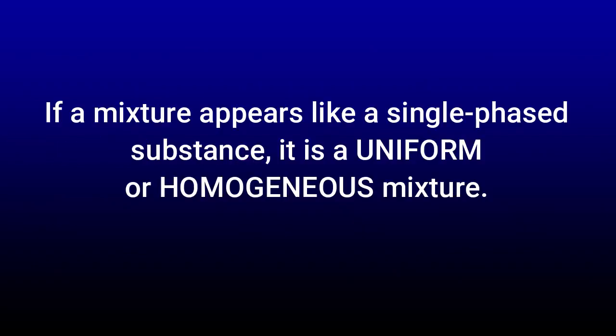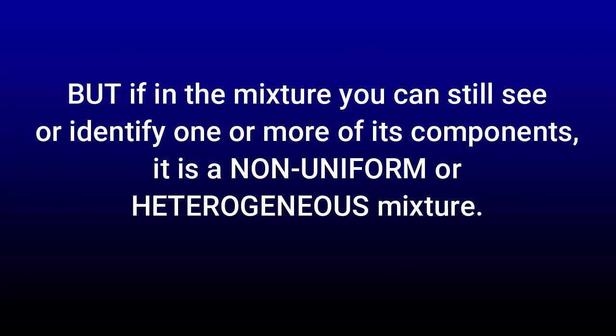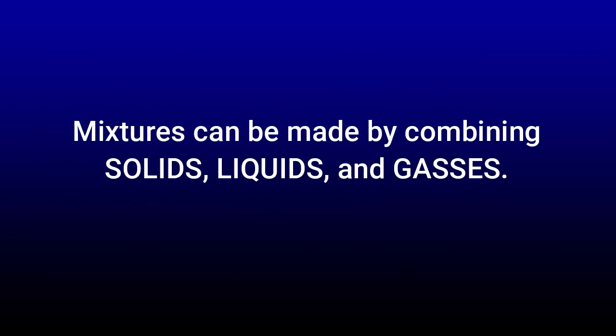To simplify: if a mixture appears to be a single substance, it is a uniform or homogeneous mixture. But if in a mixture you can still identify one or more of its components, it is automatically a non-uniform or heterogeneous mixture. A mixture can be made by combining solids, liquids, and gases.